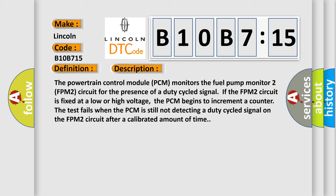The powertrain control module PCM monitors the fuel pump monitor 2 FPM2 circuit for the presence of a duty cycled signal. If the FPM2 circuit is fixed at a low or high voltage, the PCM begins to increment a count of the test fails when the PCM is still not detecting a duty cycled signal on the FPM2 circuit after a calibrated amount of time.